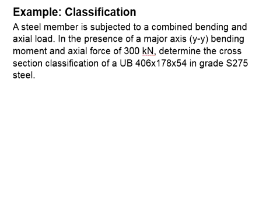Let us try an example to determine the classifications of a steel member. The member is subjected to a combined bending and shear load. The bending is at its major axis, and there is a shear force of 300 kN.